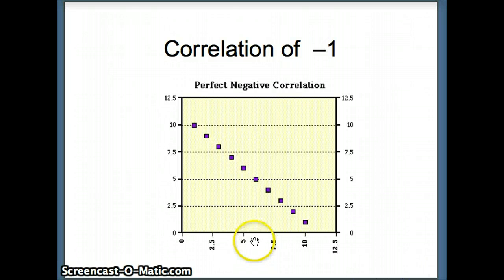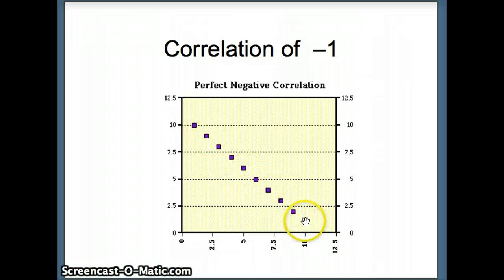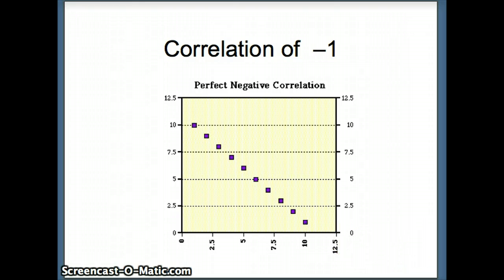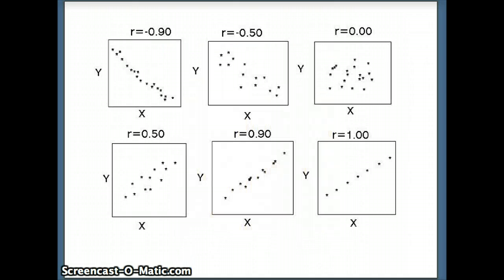A correlation of negative one means all of the points lie on a straight line with a negative slope. To predict the y value, you simply plug the x value into the equation of the line and you get the exact answer for that y value — hence a perfect negative correlation.